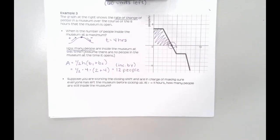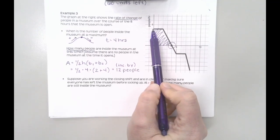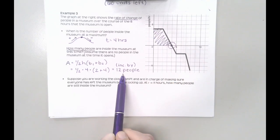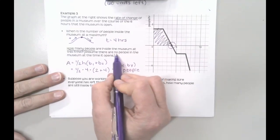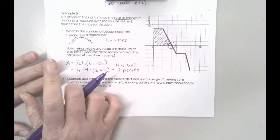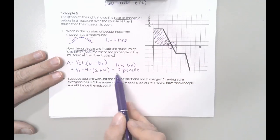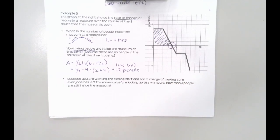If this was another situation and I told you that at time equals 0 I had 50 people already inside the museum, then I could say it increased by 12, and I would actually have 62 people inside. That's where this piece of information is important — we're assuming we're starting at 0, so when I increase by 12 that just means that I have 12 people.